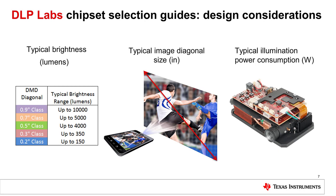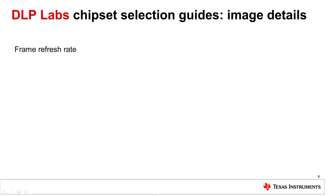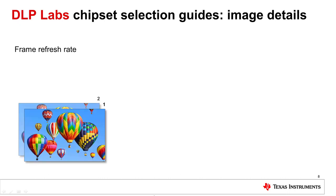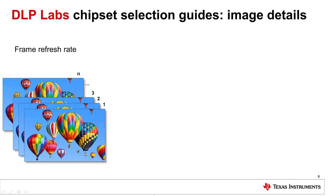Illumination power consumption is the amount of power the illumination source uses while it is turned on. The table lists the maximum amount of current supported by each PMIC. Typically, higher current means higher brightness capability. The appropriate PMIC should be selected based on the illumination type and brightness needed. The frame refresh rate is measured in Hertz, and it is simply the number of frames displayed each second. Typically, the higher the refresh rate, the smoother, cleaner, and sharper the video appears.